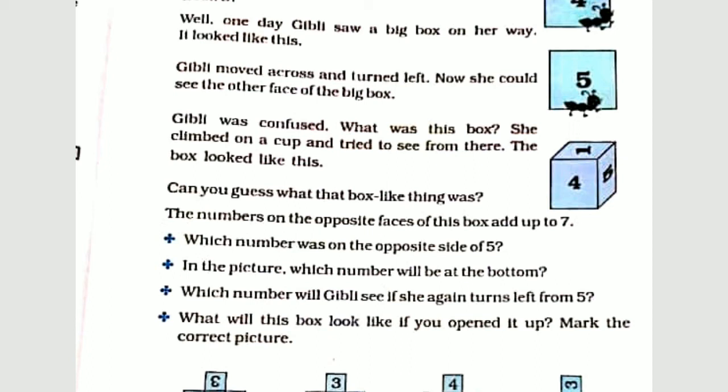It was a dice — the kind we use with snake and ladder, ludo, and other games. The number on the opposite face of this box adds up to 7. So with 5 on one face, the opposite side will be 2, because 5 plus 2 equals 7.